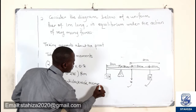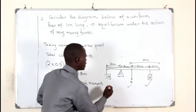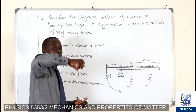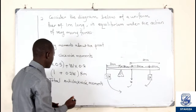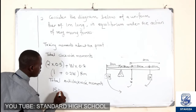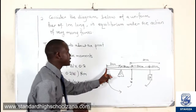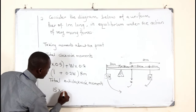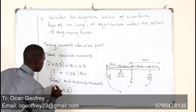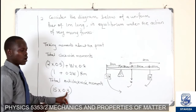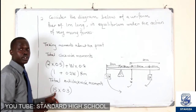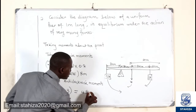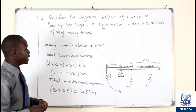For the total anti-clockwise moment: the 15 Newton force moves in the anti-clockwise direction, like unscrewing a nut. Its distance from the pivot is 30 centimetres = 0.3 metres. So total anti-clockwise moment = 15 × 0.3 = 4.5 Newton metres.